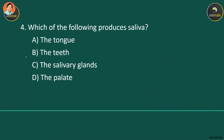Which of the following produces saliva? This should be an easy answer — saliva is produced by the salivary glands, all located in the mouth. We have three pairs: the parotid glands, sublingual glands, and submandibular glands.